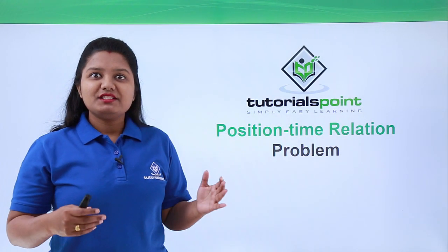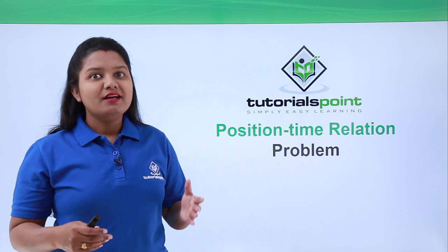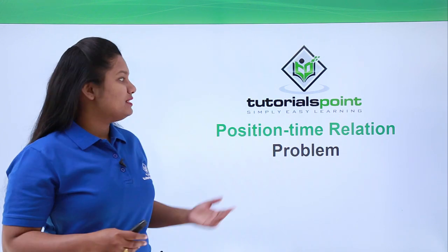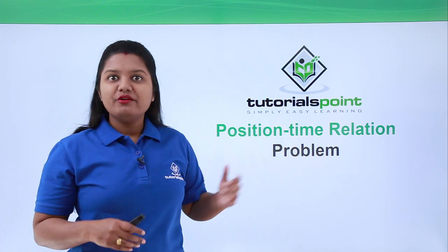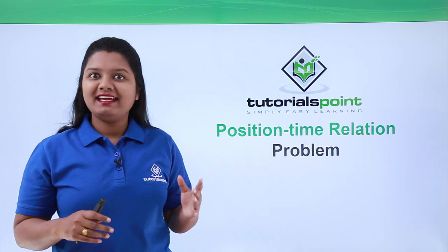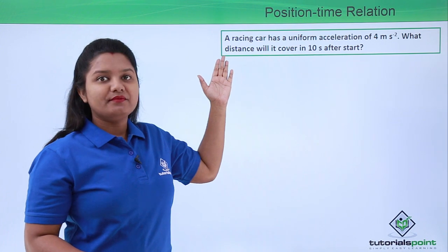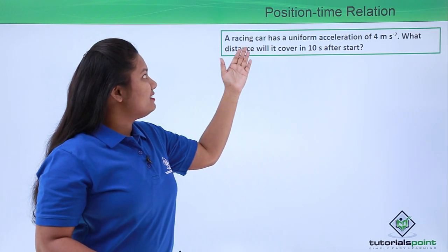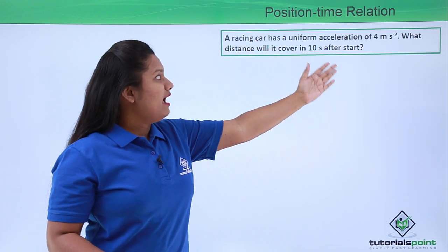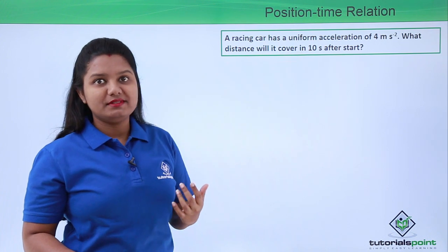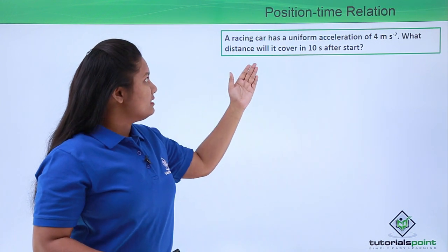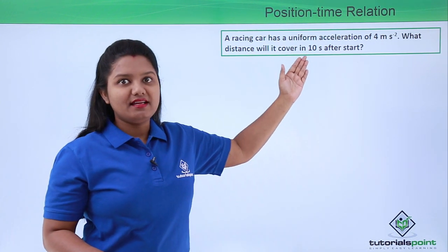Hello everyone, in this video we'll be looking at a problem which we can solve using position-time relation, which is otherwise known as the second equation of motion. So here is the problem: a racing car has a uniform acceleration of 4 meters per second squared. What distance will it cover in 10 seconds after start?